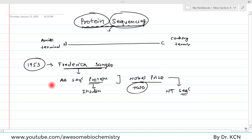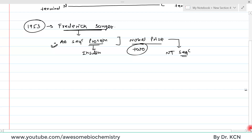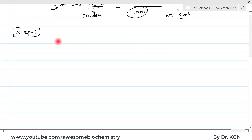In this video, we will talk about how to determine the amino acid sequence of a protein. Protein sequencing is a multi-step process, not a single-step process. We will understand all the steps of protein sequencing one by one. To understand step one, let us take the example of hemoglobin.